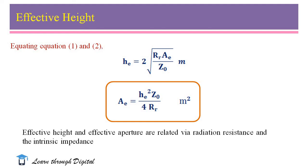The unit for effective height is in meters. Rearranging the equation for He, we get the expression for effective aperture: Ae equals He squared times Z naught divided by 4Rr, with unit in meters squared. This equation gives the relationship between the effective aperture and effective height via intrinsic impedance and radiation resistance. I hope you are now clear about the term effective height and how to calculate it based on current distribution.